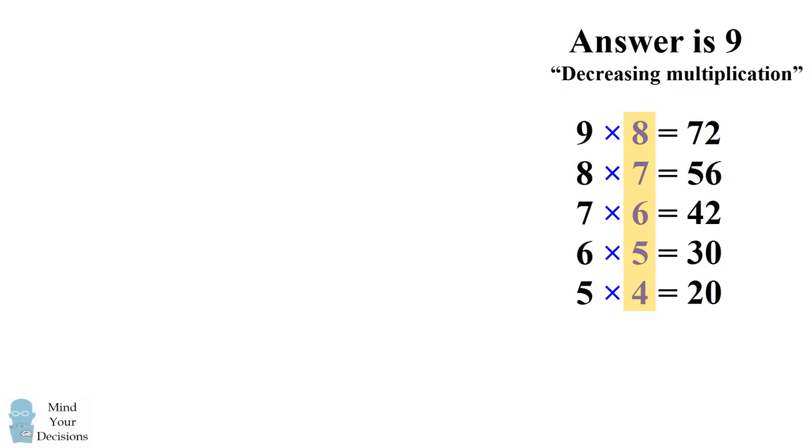This is a sequence of numbers. We have 8, 7, 6, 5, and 4. So this group of people argues that if you decrease this you would get the next line which means you should multiply the next line by 3. So they would say the answer is 3 times 3 which equals 9.